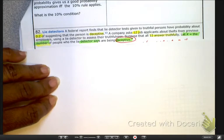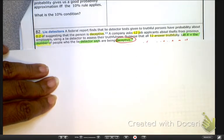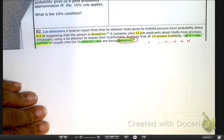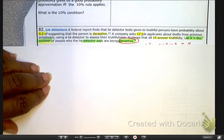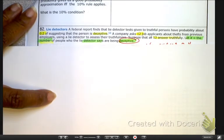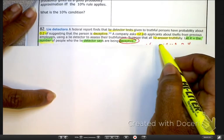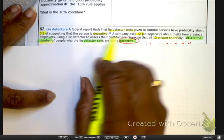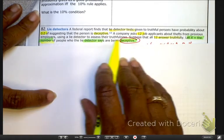Now, go to page 15, and go ahead and read that scenario. I'm looking specifically at problem number 82. So, what we see going on here is that we have a lie detector, and with the lie detector, it's given to a truthful person, and they're saying that it's a 2% probability of suggesting that the person is deceptive.